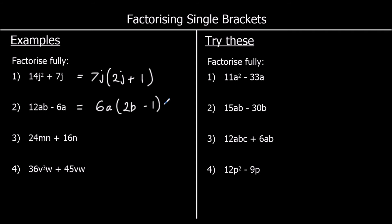Question 3: 24mn plus 16n. The biggest times table 24 and 16 are both in is the 8 times table, so we take 8 outside. And we've got mn and n — they both have n as a factor. So 8n goes on the outside. 8 times 3 makes 24, and n times m makes mn. And 8n times 2 will make 16n.